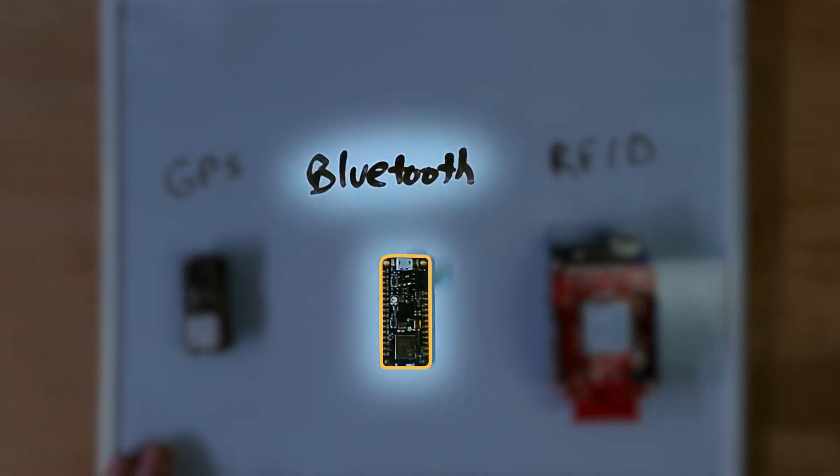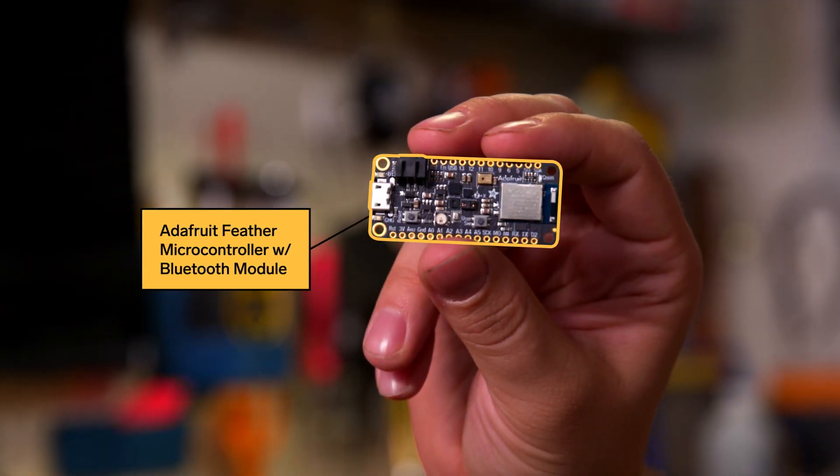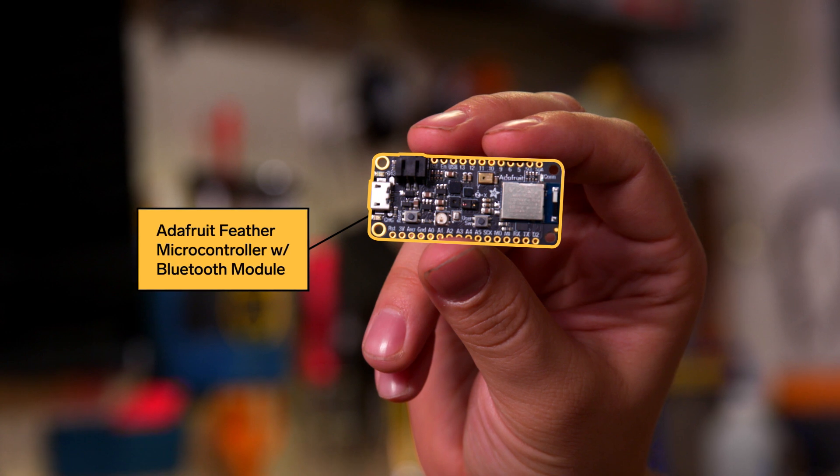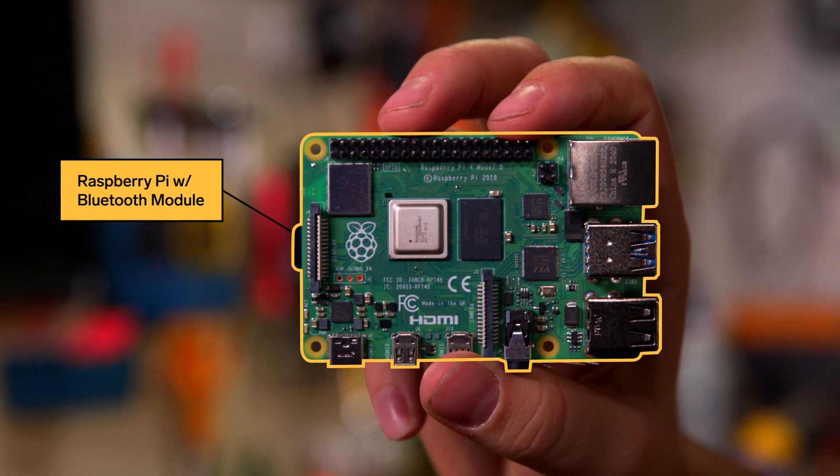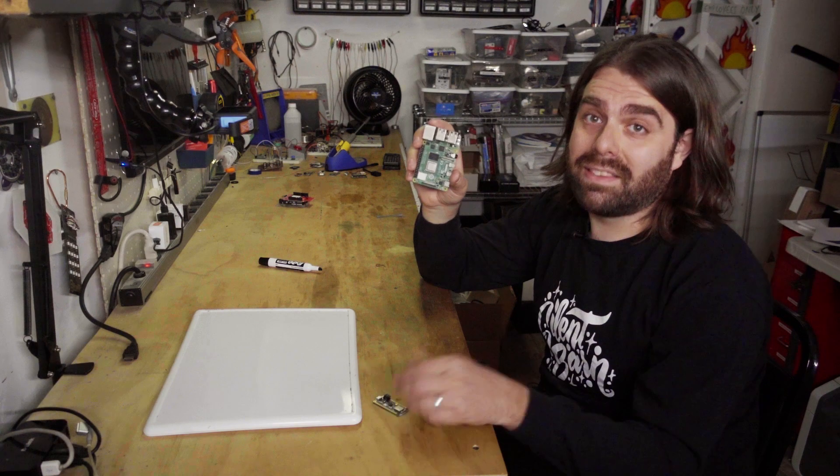Now onto Bluetooth. This is another Adafruit board. This has a Bluetooth module built in. So what we're going to do is program this to be a Bluetooth beacon, a device that emits a Bluetooth signal. So I can use a Raspberry Pi computer with a Bluetooth module built in to sense if there are any Bluetooth beacons in the vicinity.